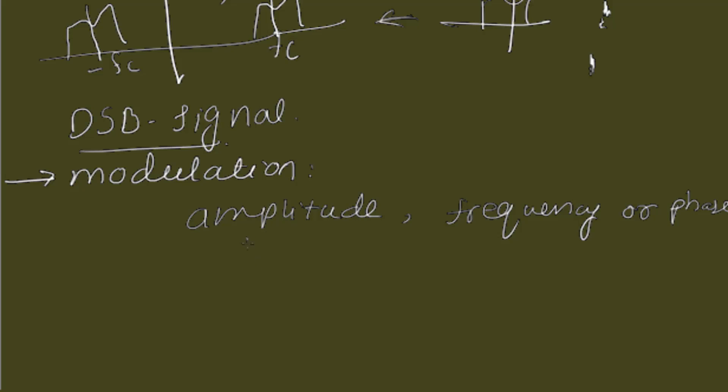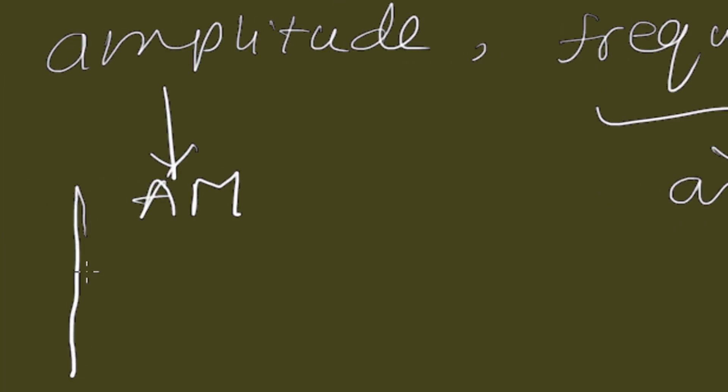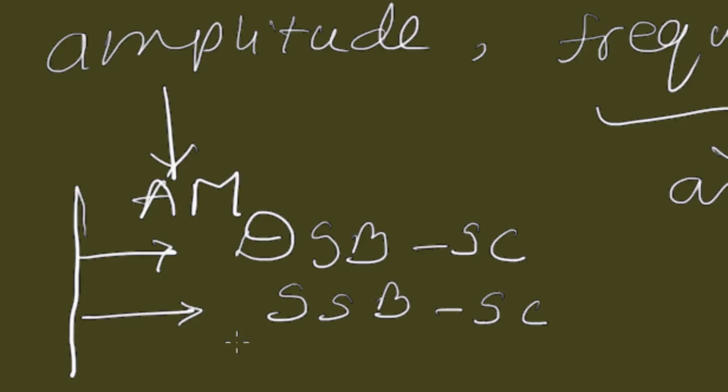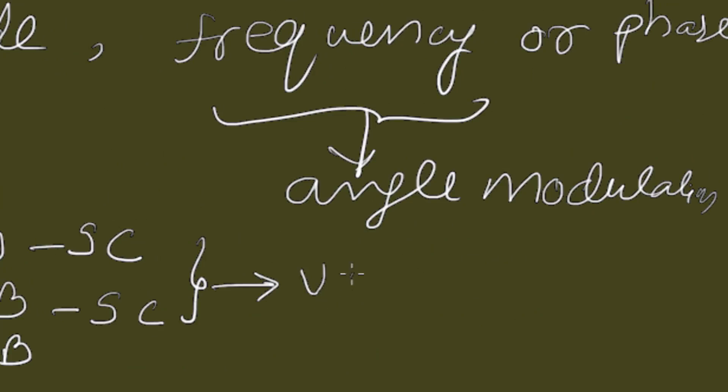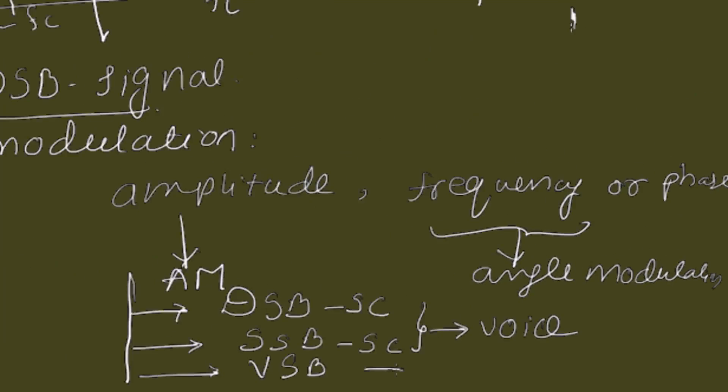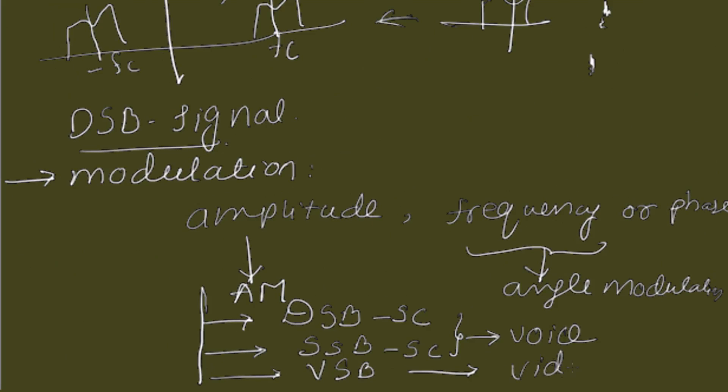If we vary the amplitude, it is called angle modulation. So, in AM there are, in AM some disadvantages are there. And to overcome those disadvantages, we consider DSP signal, DSP-SC, double sideband suppressed carrier and SSB-SC, single sideband suppressed carrier and DSP. These two are used for voice communication, that is voice transmission and this is used for video communication, I mean video transfer.